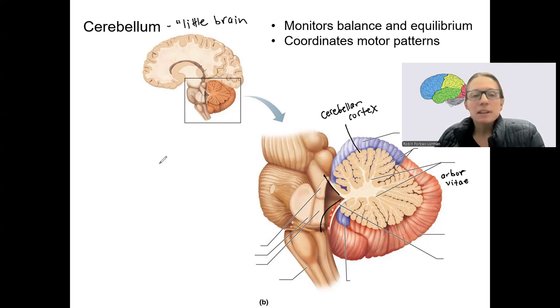So the cerebellum itself is involved in feedback for muscle movement. It gets information from the cortex and also information from the body related to body position. And it compares those two sets of information and then adjusts, helps to adjust motor output.